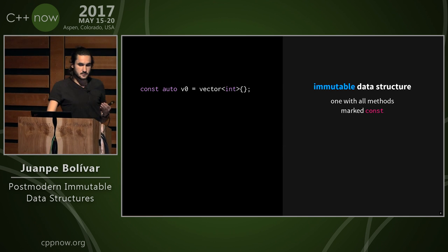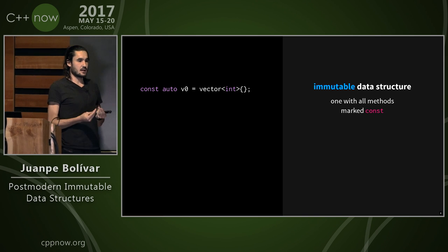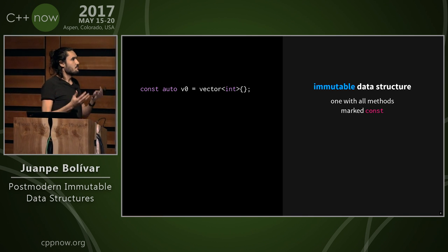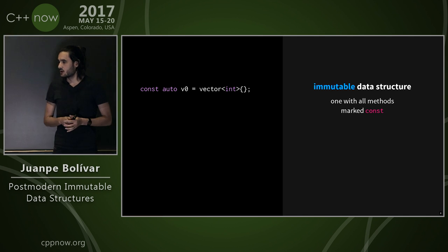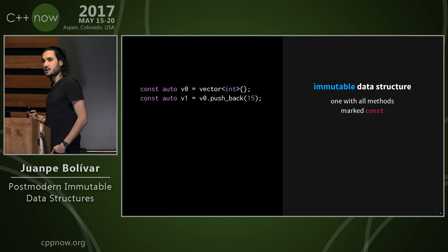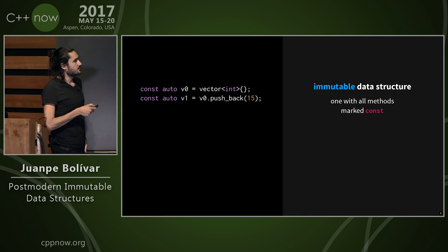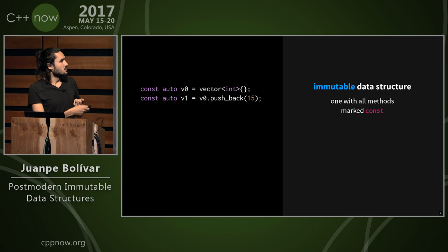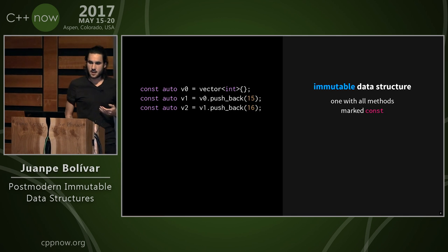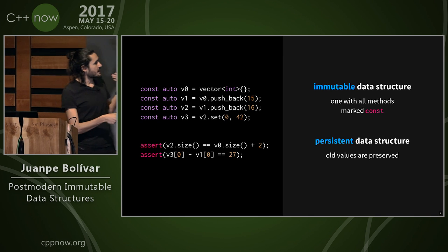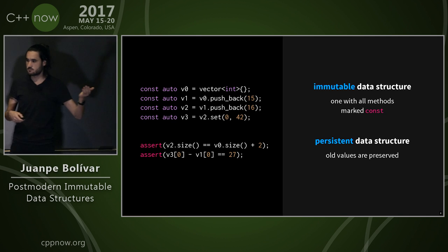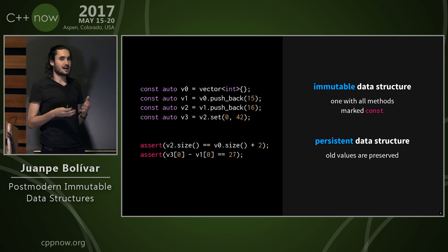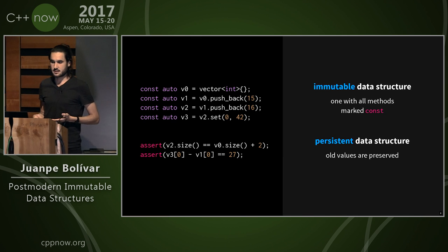A good place to attack this problem is with data structures, since they are the prime matter from which we build our data models. We can imagine a magical vector type that is always const because all its methods are const. This vector can be updated via a push_back method that does not update the vector in place — it returns a new version of the vector with the desired effects applied. Via this immutable interface, we automatically achieve a property called persistence, specifically full persistence, because old versions of the document are still there and not destroyed.